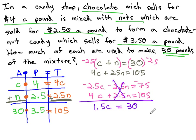Finally, to get the C alone, we simply have to divide both sides by 1.5, and we have C, or the amount of chocolate, is equal to 20.